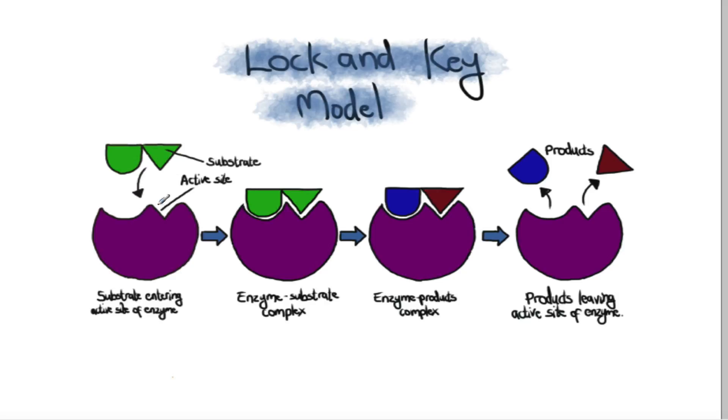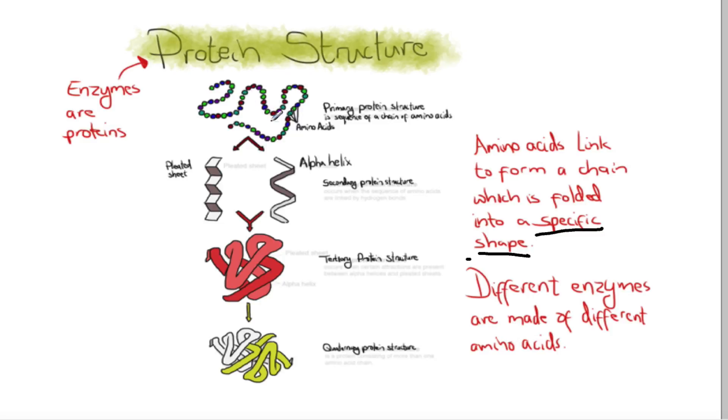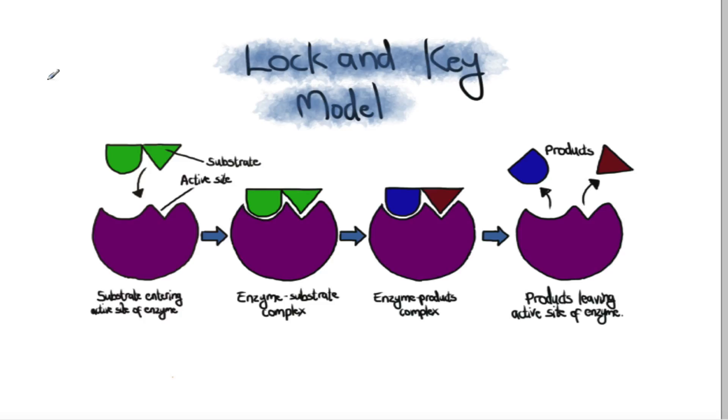So you can see now because that site is so specific to the substrate, to the thing that actually reacts in there, only a small change in one of these amino acids, if that affects that active site shape then the substrate will no longer fit into the active site which means it will not speed up the reaction.